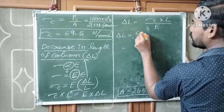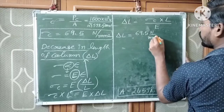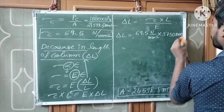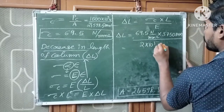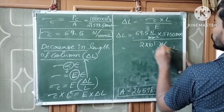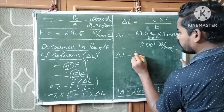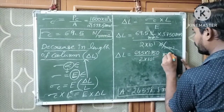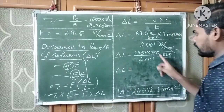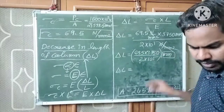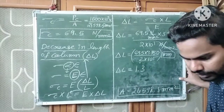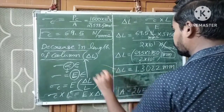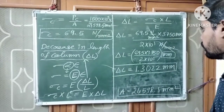Substituting the values: δL = (69.5 × 3750) / (2 × 10⁵). The newton per mm squared units cancel, giving δL = 1.3022 mm. So the decrease in length of the column due to the compressive load of 1500 kilonewton is 1.3022 mm.